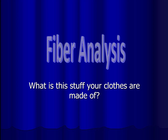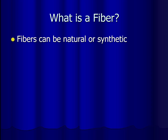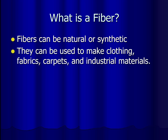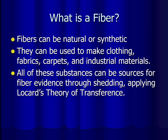You can think of this as figuring out what this stuff your clothes are made of. Clothing is made out of fibers, which can be natural or synthetic. Natural sources and synthetic sources are quite different. Fibers are used to make clothing, fabrics, carpets, and other industrial materials. All of these substances can be sources for fiber evidence through shedding of the fibers from a surface, and there we're applying Locard's theory of transference.